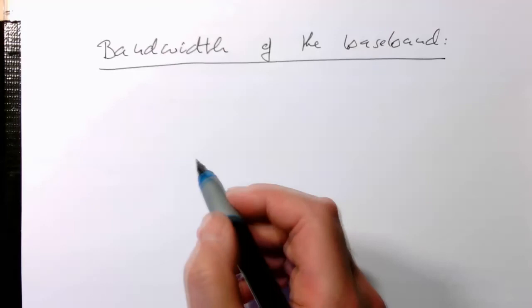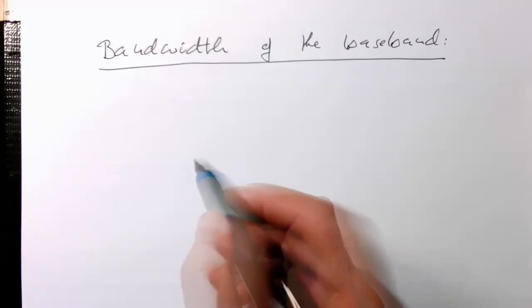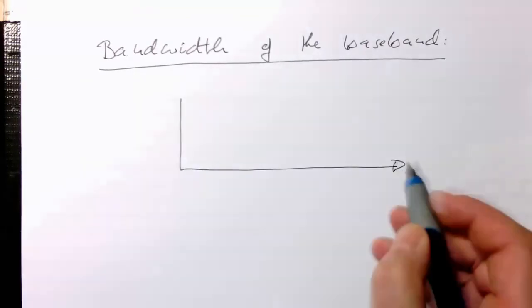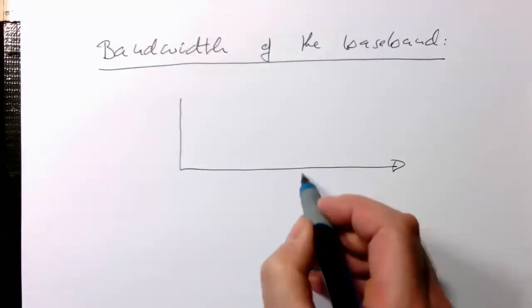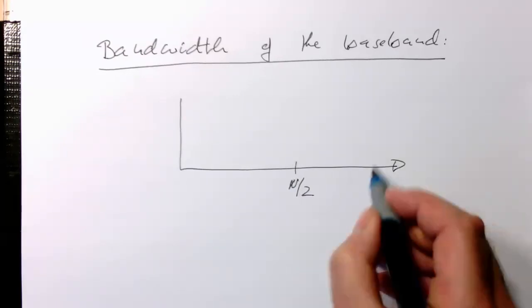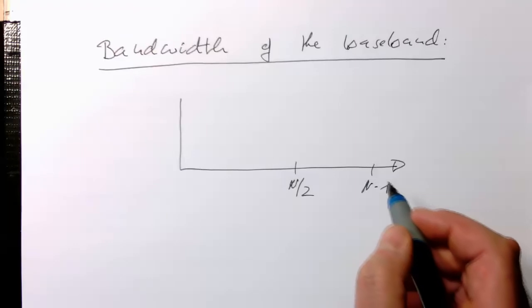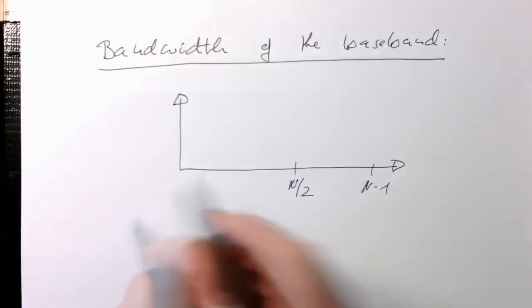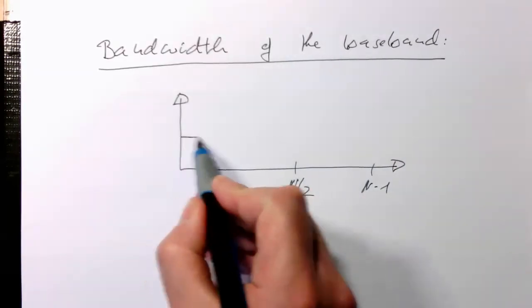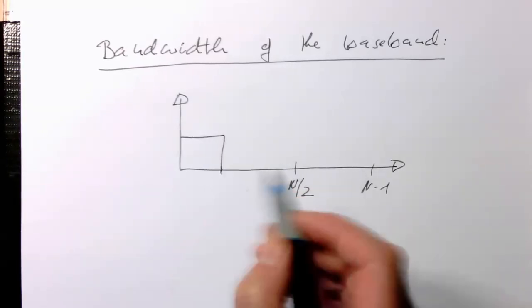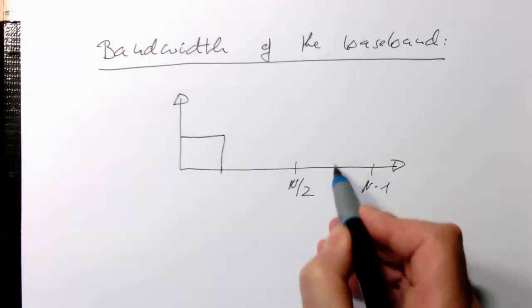That's again a beautiful concept that, so if this is our spectrum here, so it's N/2, that's N-1. So what people would do is, usually what is done is that we are setting our signal somewhere here.